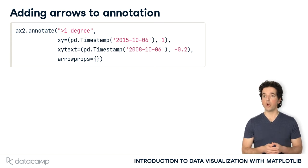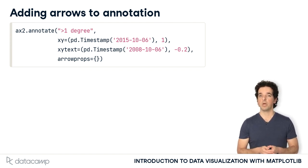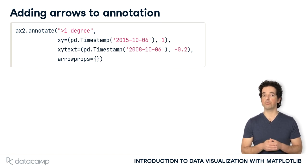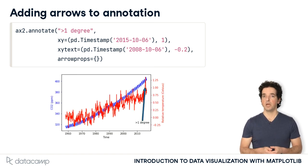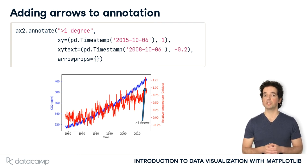The keyword argument to do this is called arrowprops, which stands for arrow properties. This keyword argument takes as input a dictionary that defines the properties of the arrow that we would like to use. If we pass an empty dictionary into the keyword argument, the arrow will have the default properties, as shown here.